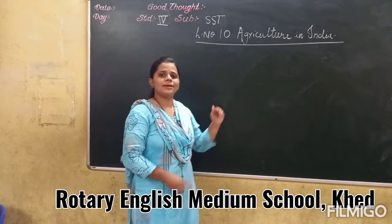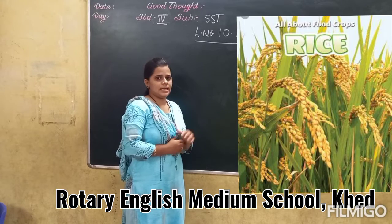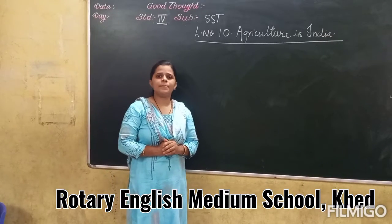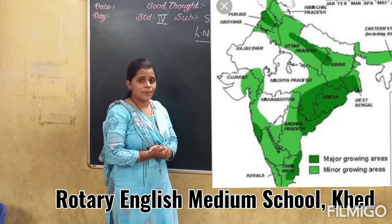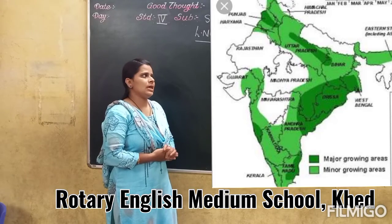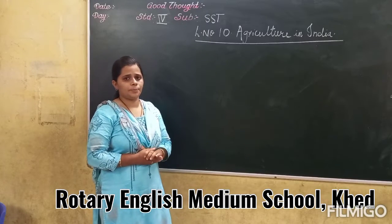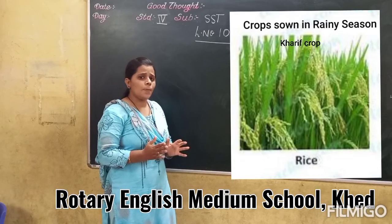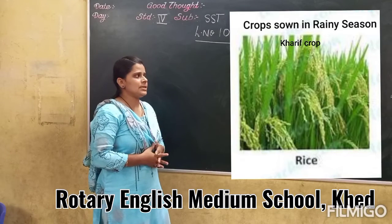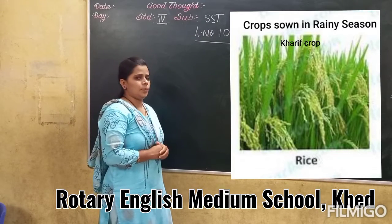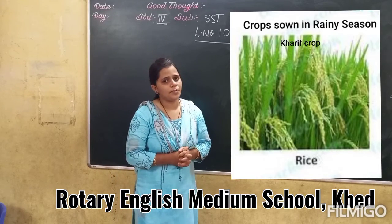Now let's talk about rice. Rice is the staple food of the eastern and southern states of India, because rice is grown in large quantities there. Rice is a Kharif crop — the crop which is sown in the rainy season. It grows well in hot and humid climate with plenty of rainfall.